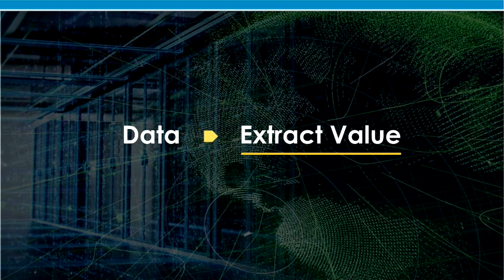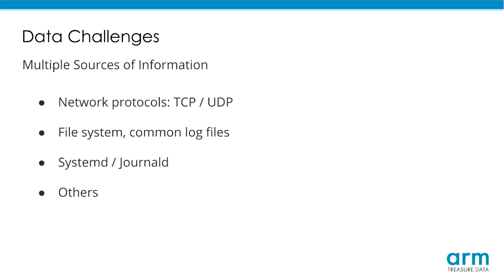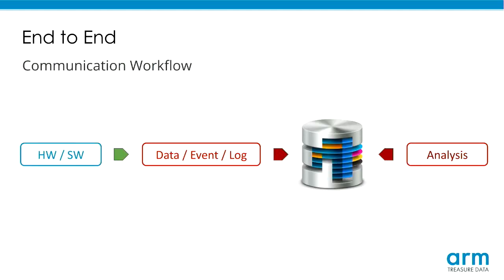That's why we need databases or places where we can concentrate the data and try to get the proper insight. The way this works is we centralize all our data in a database with a common schema, and after that we can extract value. Data comes from multiple places — for example, from network protocols like firewalls sending UDP packets, from the file system, journald, or anything working in our system. The common workflow is: hardware or software generates some event or log, it gets centralized in a database, and then we do analysis.